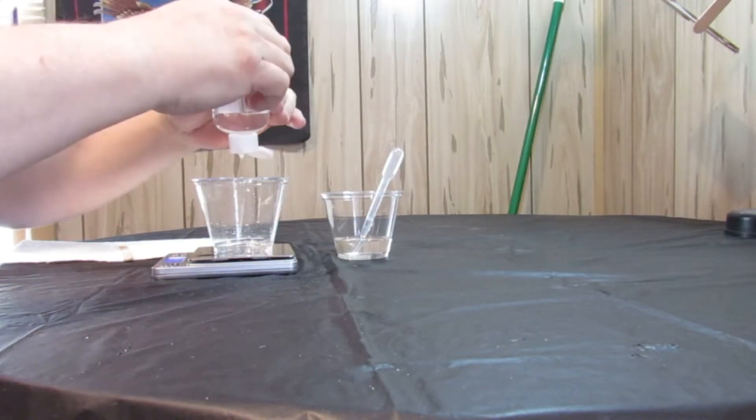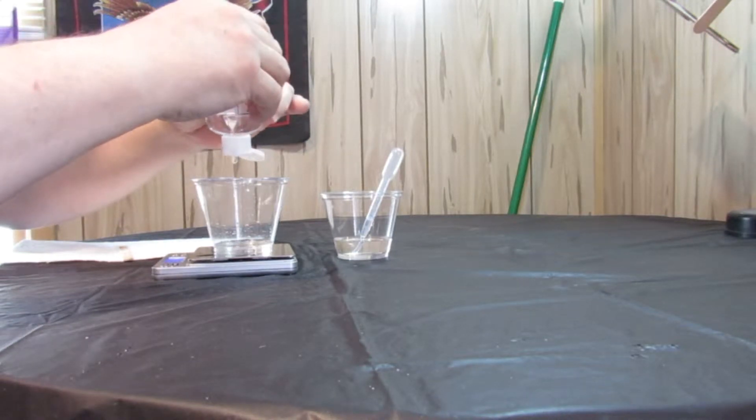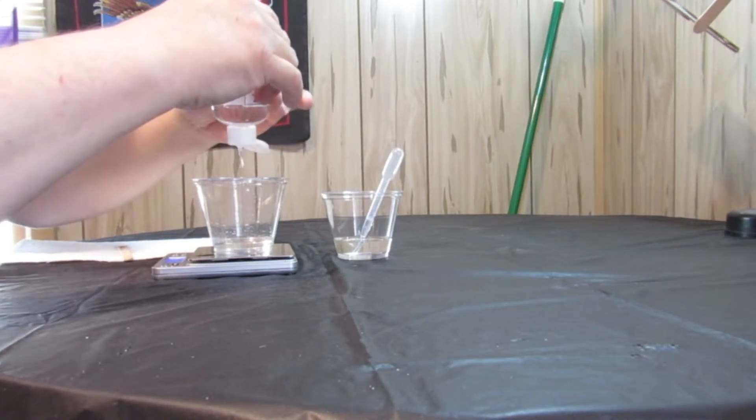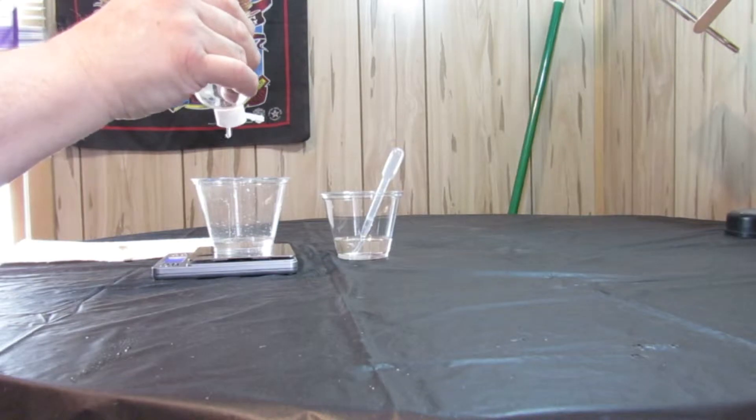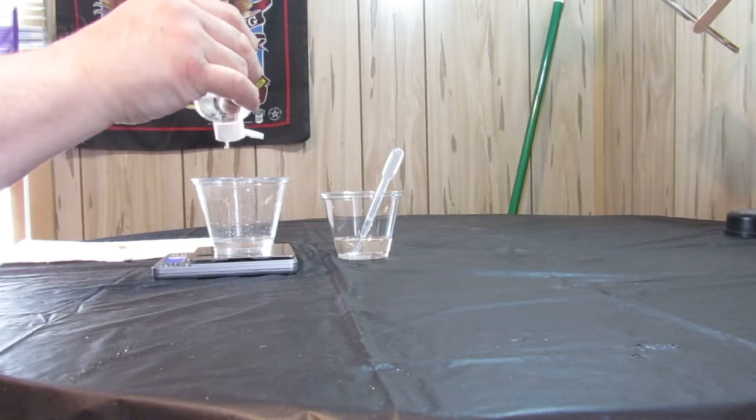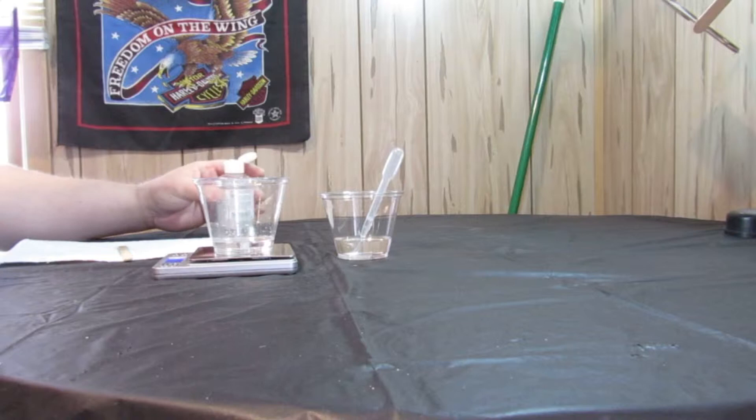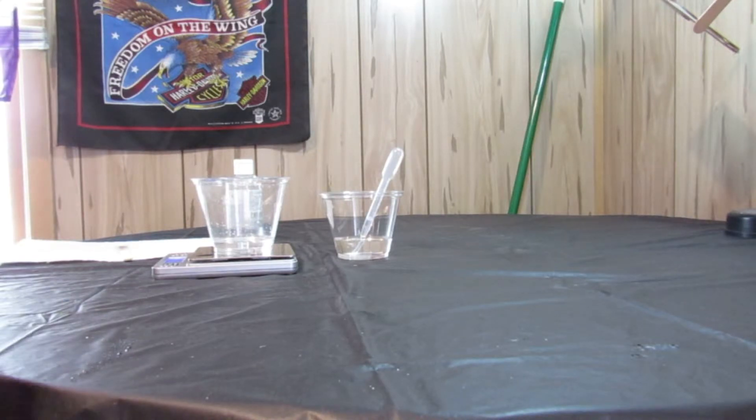Let's go to five ounces. Five ounces. For five ounces of vegetable glycerin, we want about an ounce of water.